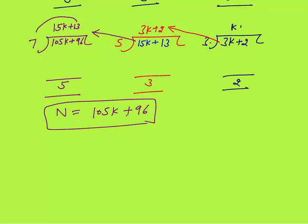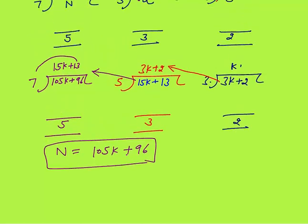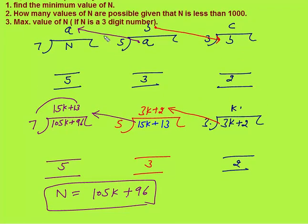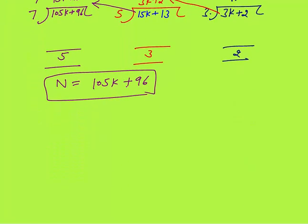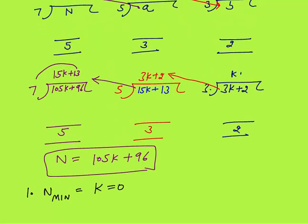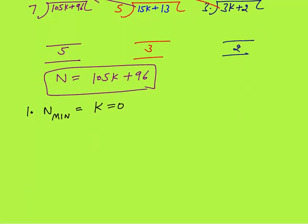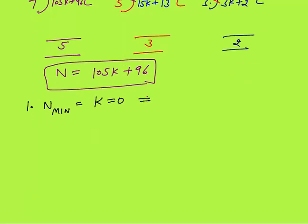So N = 105K + 96. In this way you can speedily find the number using the reverse method. For the minimum value of N, I put K = 0, because K is the last quotient and the minimum value of a quotient is 0. So the minimum value of N is 96.